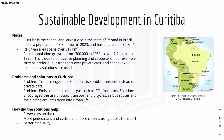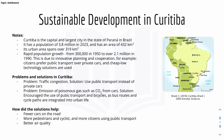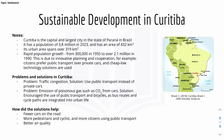Here's sustainable development in Curitiba. Curitiba is the largest city and capital of its state in Brazil, with a population of 3.8 million in 2023 and an area of 432 km². There is rapid population growth in Curitiba, supported by these statistics, due to innovative planning and cooperation by the people there. For example, citizens in Curitiba prefer public transport over private cars, and cheap low-technology solutions are used.